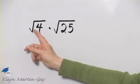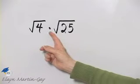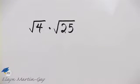So let's find the square root of 4, then we'll find the square root of 25, then we will multiply those two numbers together.